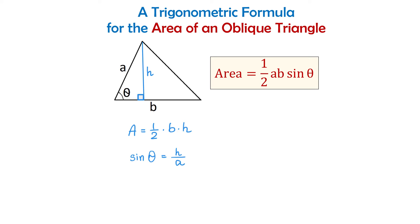Now let's solve this equation for h, and for this we will multiply both sides by a. Then on the right side a and a will cancel and we will have that h equals a sine of angle θ.